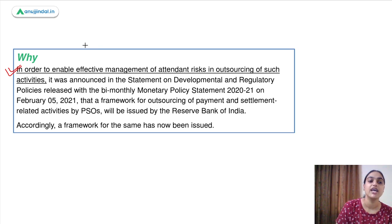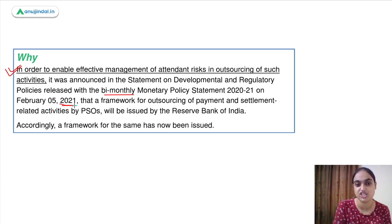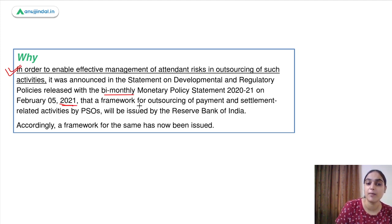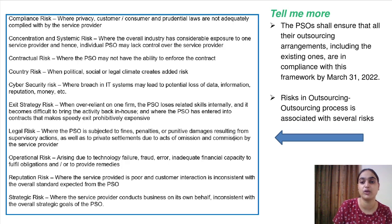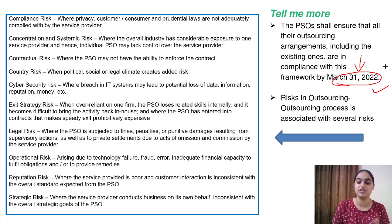In order to ensure effective management of the risks associated with outsourcing, it was announced in the Statement of Development and Regulatory Policies along with the Bimonthly Monetary Policy Report in February, that RBI will come up with a PSO outsourcing-related framework. That framework has now been released and needs to be implemented by 31st March 2022. Even existing arrangements must comply with this framework by that date.